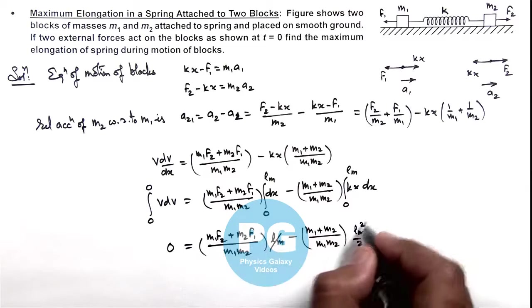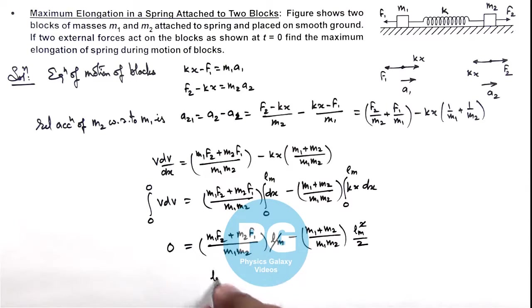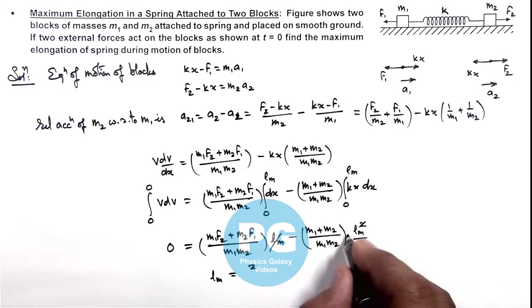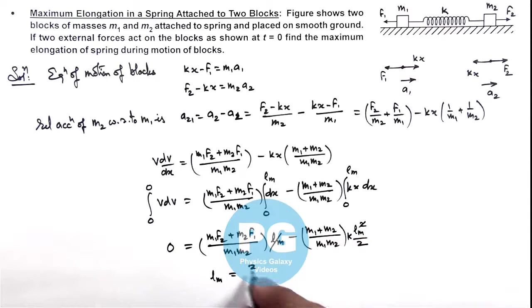Here in this equation lₘ gets cancelled out and we get the value of lₘ which is the maximum elongation. On simplifying this will give us 2. 1/k is also here which I have missed out. This is 2 by k multiplied by m₁f₂ plus m₂f₁ divided by m₁ plus m₂. So this will be the final result of this problem.